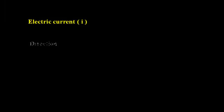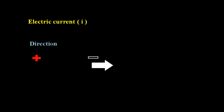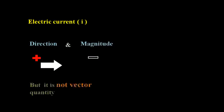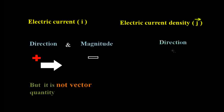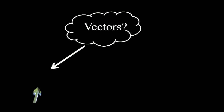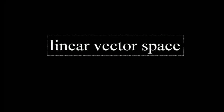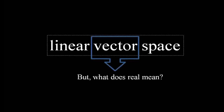Take an example: electric current has both direction as well as magnitude, but electric current is not a vector quantity. Will electrical current density be a vector quantity? Is it an arrow, a column matrix, or an expression? Let's find out. To find the answer to these questions, first we discuss linear vector space, or vector space.